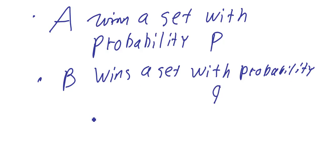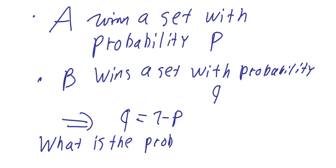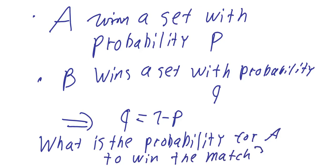Of course, if you know something about probabilities, Q has to be 1 minus P because it's not possible that a set is tied. So one side has to win a set and if she doesn't manage to do so the other side will win. And the question would be what is the probability for A to win the match, and also for B. So this is the question and we will answer that question in the next section of the video. So stay tuned.